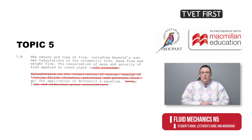In the new topic 6, round pipes no longer need to have branches when doing calculations. Also removed are the calculations of the energy conservation of flowing fluids, as well as energy loss and hydraulic power calculations.